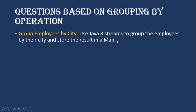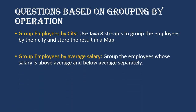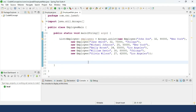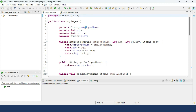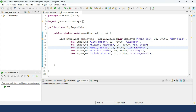Our next question is: group employees by average salary — group the employees whose salary is above average and below average separately. We will quickly move to Spring Tool Suite and try to solve this. Here we have our Employee class with four fields: employee name, age, salary, and city, and we have an Employee main class with some dummy values added.